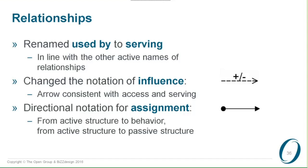We slightly changed the notation of 'influence' — we changed the arrowhead because it's now more consistent with the access and serving relationships. That also has to do with the structure of the set of relationships: those three are a kind of dependency relationships, and we wanted to reflect that in the notation. It used to look much like the flow relationship, and that created some confusion, so we changed the arrowhead to make that a little clearer.